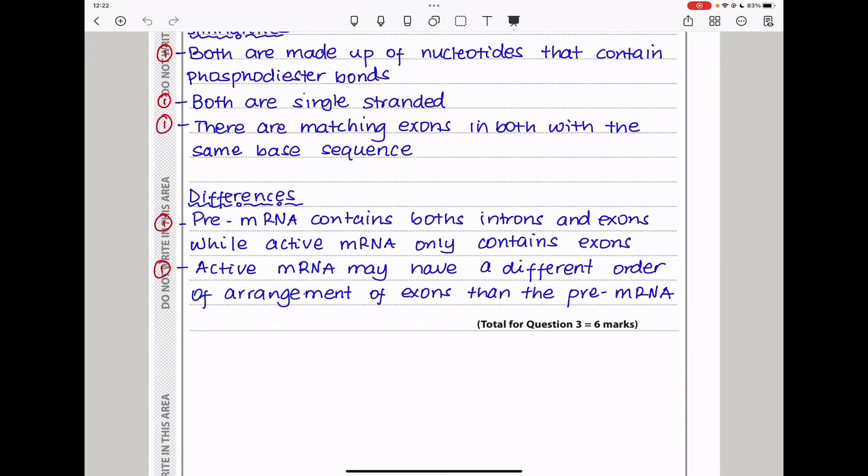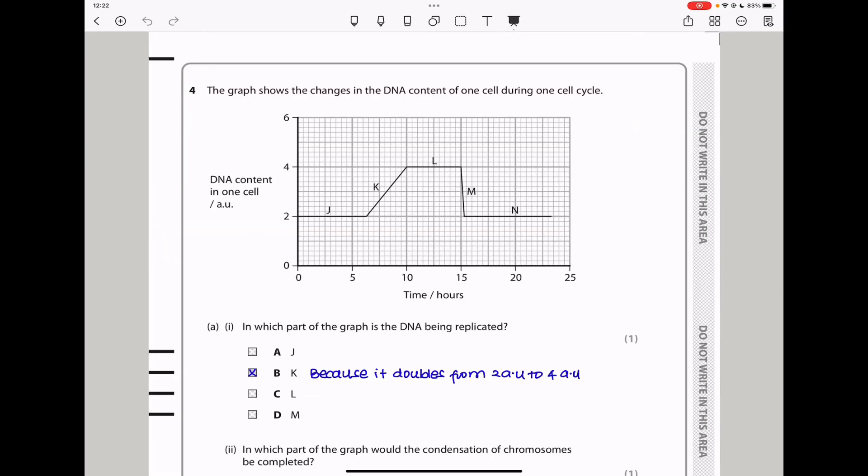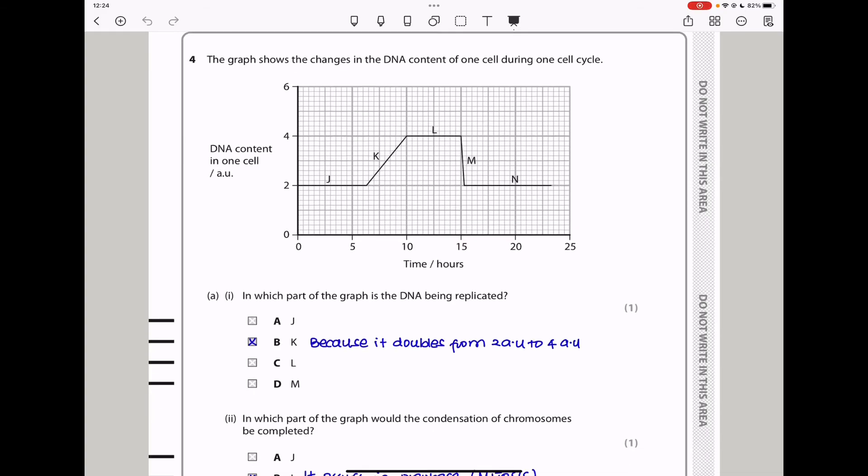Question 4. The graph shows the changes in the DNA content of one cell during one cell cycle. So here we have the DNA content in one cell in arbitrary units. We also have the time in hours. From part J, we can see the DNA content is the same. But for K, it doubles, so it means this is during interphase when the DNA is replicated. In part M, the cell content is decreasing, and that means the cell has divided. So they say in which part of the graph is DNA being replicated. Because replication leads to the doubling of the DNA content, K should be the region when replication occurs. We see it moves from 2AU to 4AU, so the answer should be B.